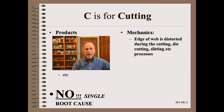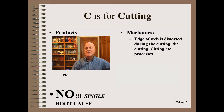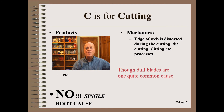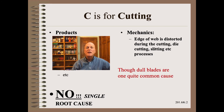As we've learned in this class, there is no single root cause. For this defect, there's not even a single mechanics other than somehow the edge of the web is distorted during the cutting, die-cutting, sawing, or slitting process. However, if there were one factor, it would be that dull blades are common contributors to cutting problems.